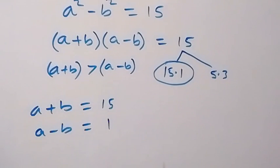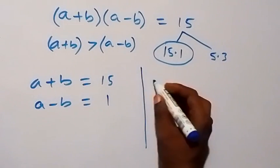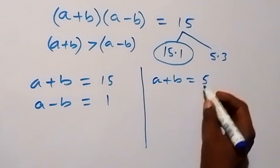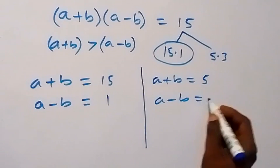And a minus b equals 1. For the second case, we have a plus b is equal to 5, and a minus b is equal to 3.